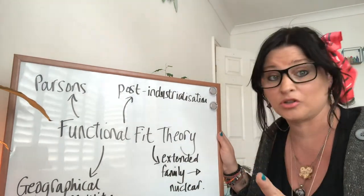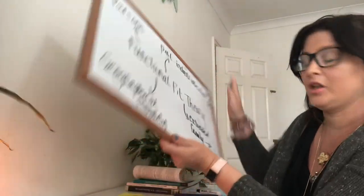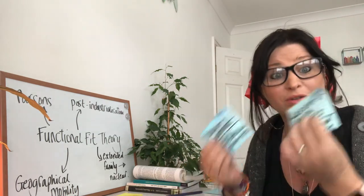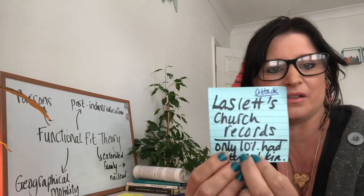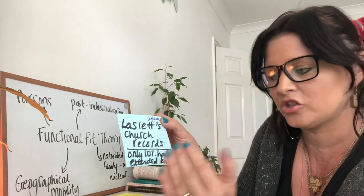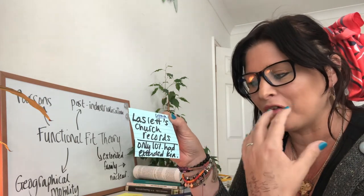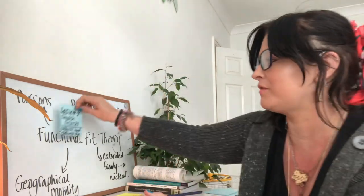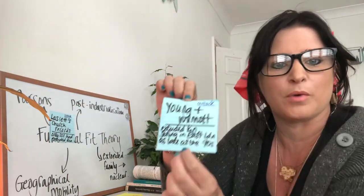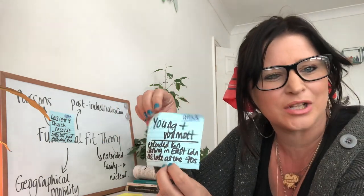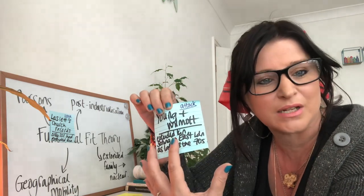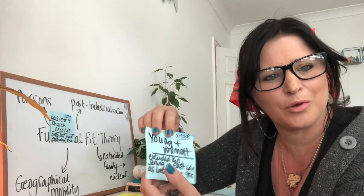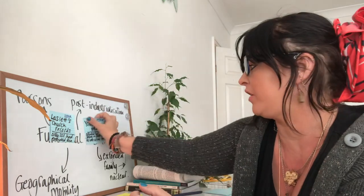Talcott Parsons was very influential and looked a lot at the historical perspective of the family. However, we have two particular studies we can use to critique this theory. One is Laslett, who used secondary data from church records which showed that only 10% of families had extended kin living in their household historically — suggesting the idea of the extended family household was in fact a myth. The other is Young and Wilmot, who found that the extended kin network was still very much thriving in East London as recently as the 1970s, really attacking Parsons' idea that we've moved in a linear way away from the extended family.